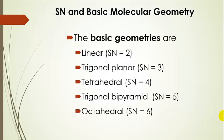Here are our basic geometries: steric number two is linear, steric number three is trigonal planar, steric number four is tetrahedral, steric number five is trigonal bipyramidal, and steric number six is octahedral. We're going to talk about the first three — linear, trigonal planar, and tetrahedral — in the next presentation, with trigonal bipyramid and octahedral covered in later presentations.